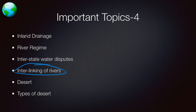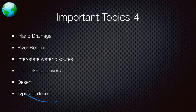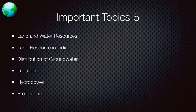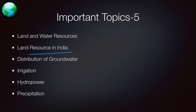Interlinking of rivers is happening a lot — what is the benefit of it, what are the pros and cons, why are some states against it, why are some in favor of it. What are deserts, what are the types of deserts, what are the deserts in India, where are they — cold deserts, hot deserts, etc. Land and water resources — what are the resources available to India.